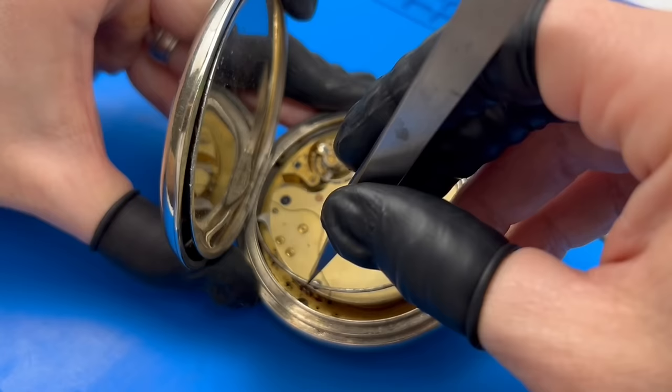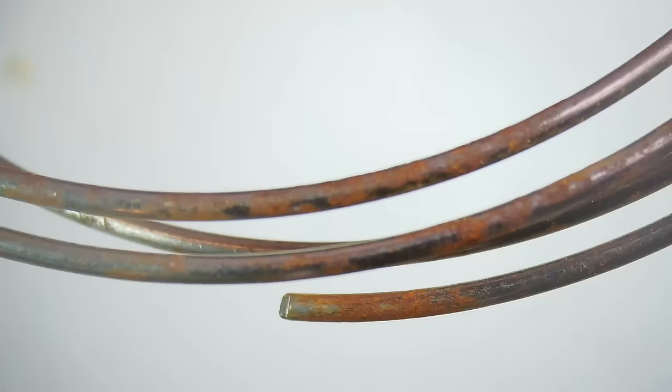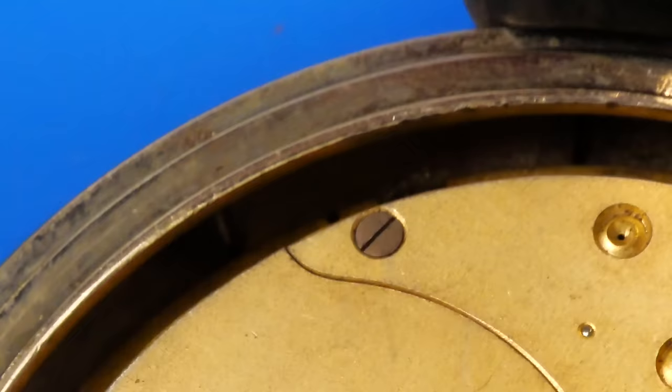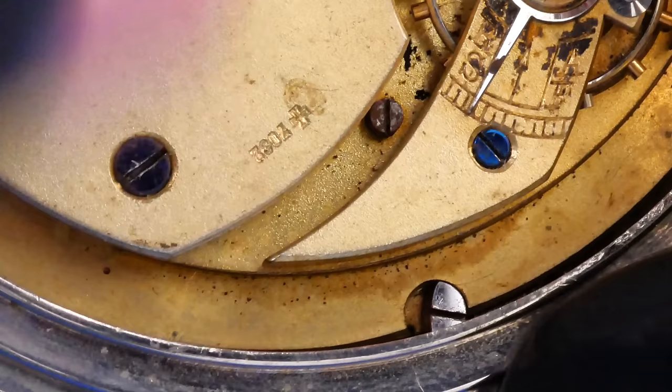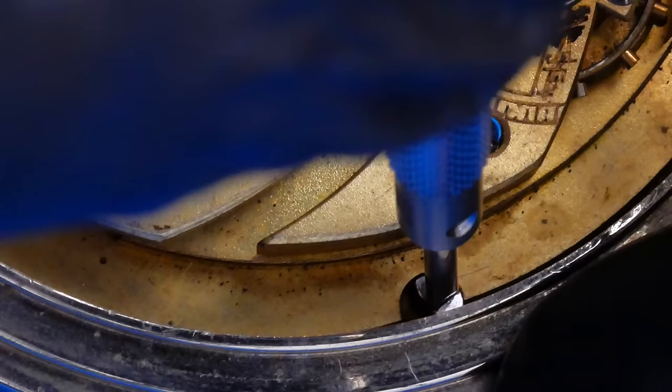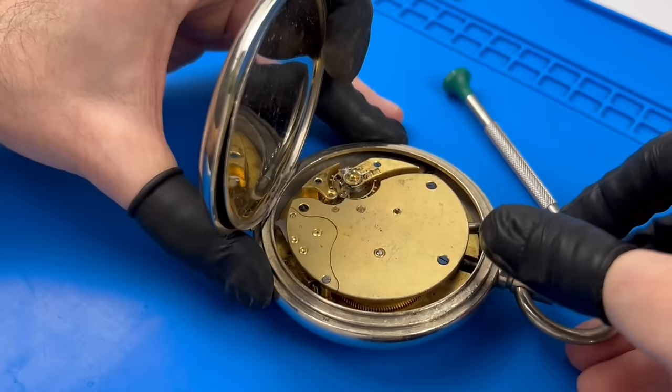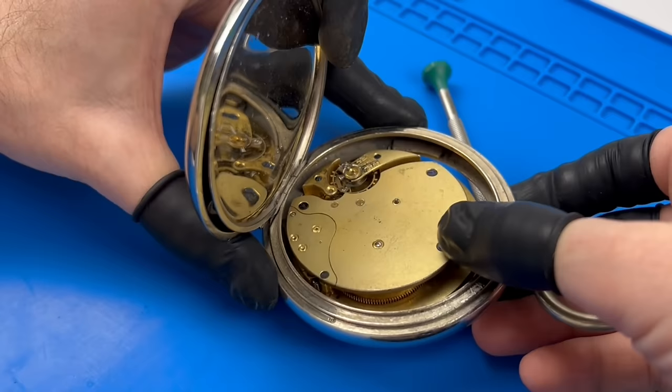One gong chimes the hours. The other gong is used, along with the first gong, to chime the quarters. These also suffer from a fair amount of surface corrosion. After turning those two screws, the movement can drop out of the case.